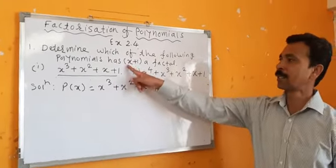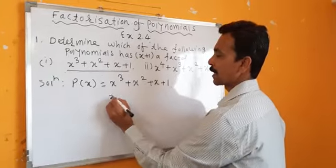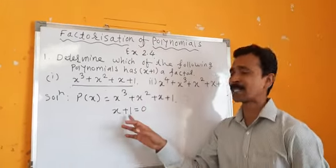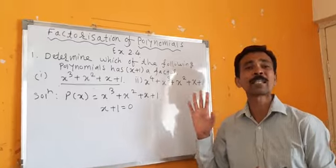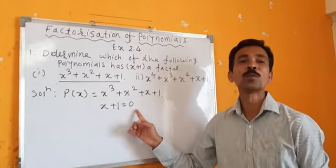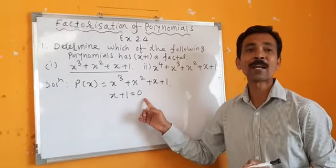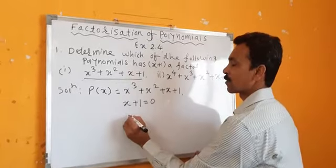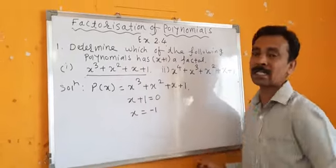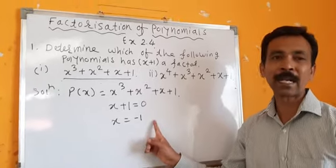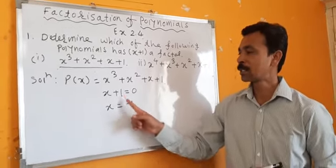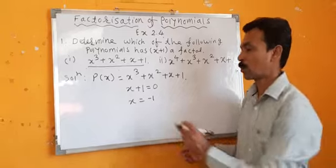It is given x plus 1. So, x plus 1 is equal to 0 — whether it is x plus 1, x minus 1, or x minus 5, this is always set equal to 0, because we have to find the value of x. So, plus 1 goes to the right hand side and becomes minus 1.